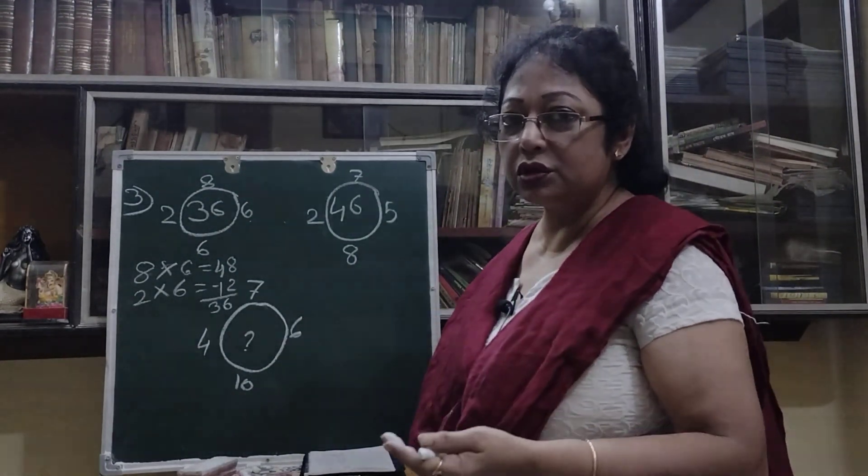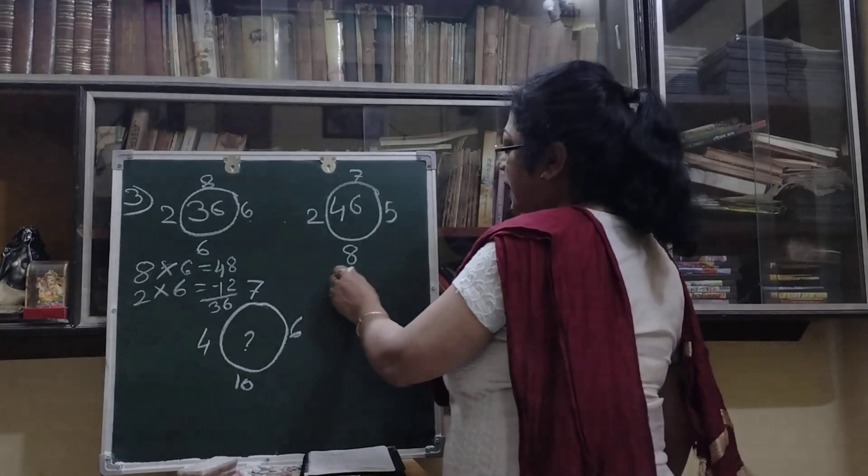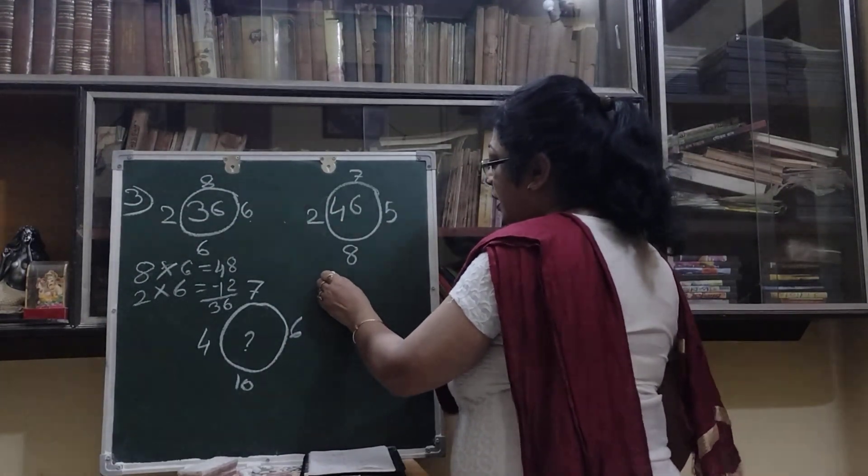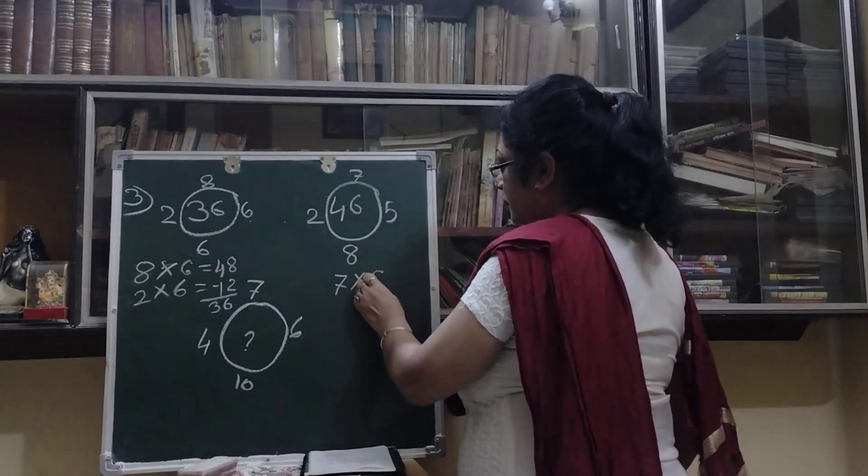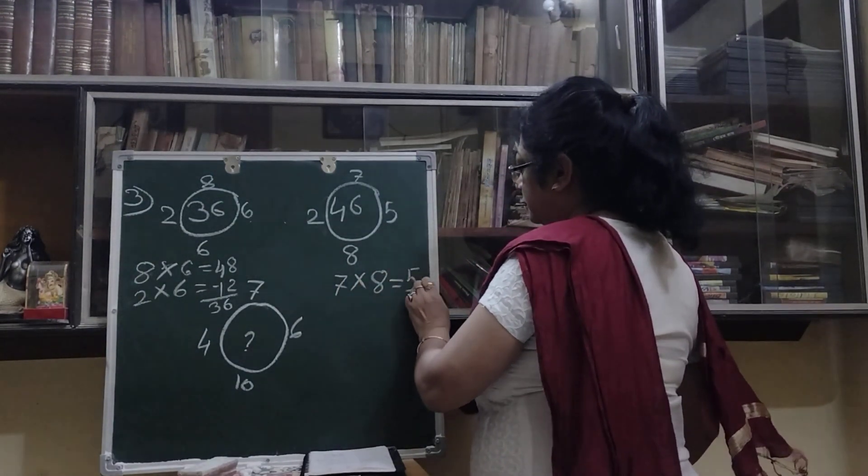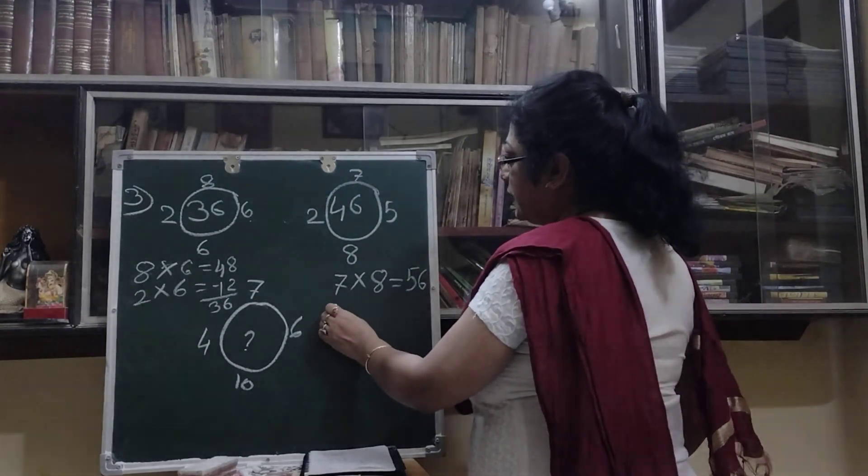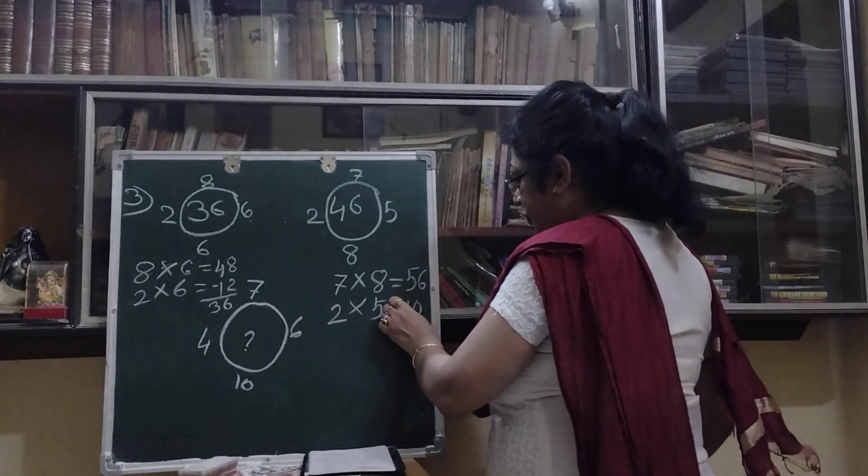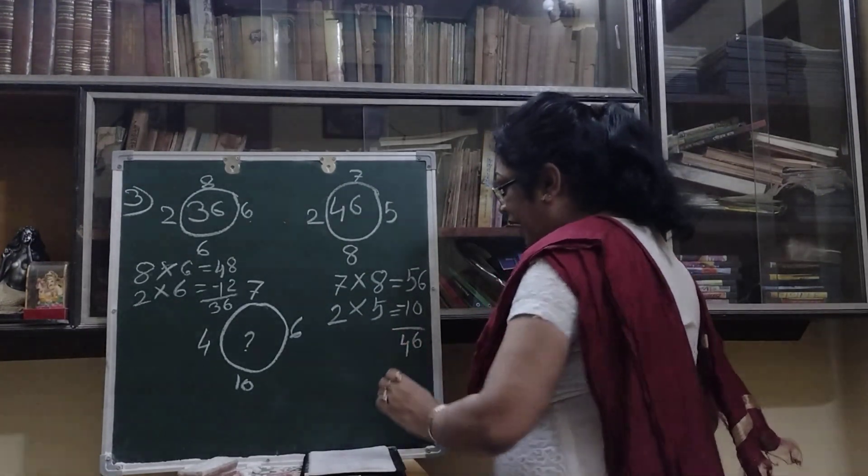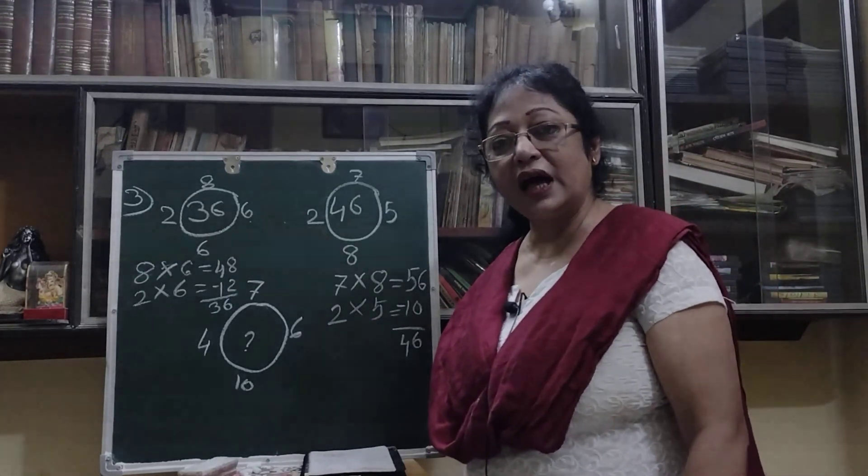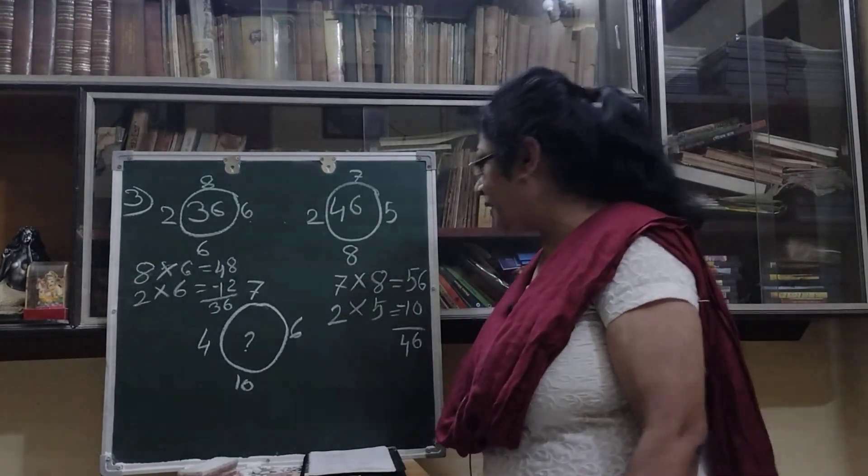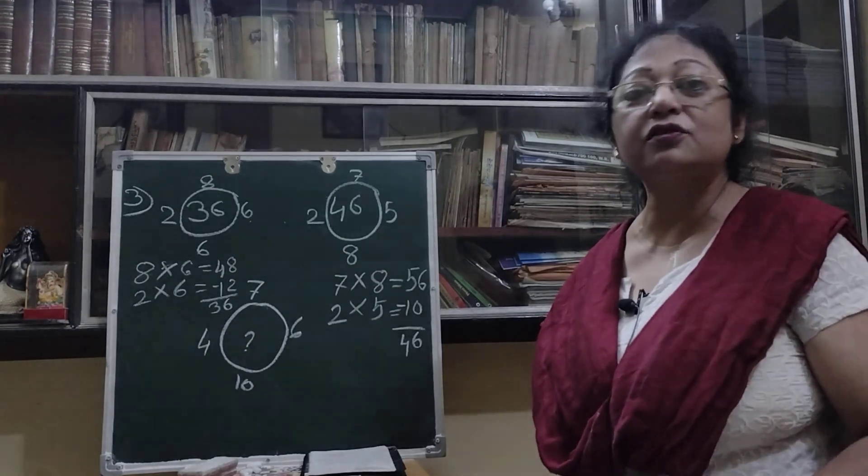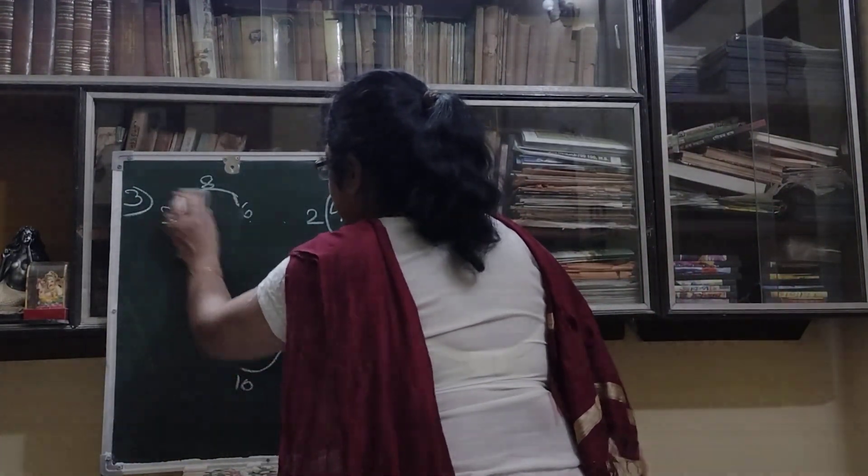For this one, same way you use the logic, definitely you can get. One more I am doing. Now first I am doing 7 into 8 and 2 into 5, that is 10. If we subtract these two, what we will get, we will get 46. And now this one you find out the answer. Write it down or you just take the screenshot and solve it and play with your friends also. Next one, let us try one more.